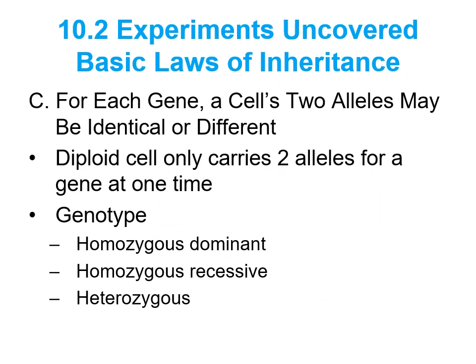How would we go about indicating if an organism has two of the same or one of one and one of the other? When discussing the genotype or the genes of an organism, we can reference them as homozygous or heterozygous. Homozygous means that both copies are the same — you can be homozygous dominant or homozygous recessive. Either way, both of the alleles inherited from mom and dad are identical. If you inherit one of each, that is going to be referenced as heterozygous. Heterozygous automatically means that you inherit a dominant and one recessive trait.